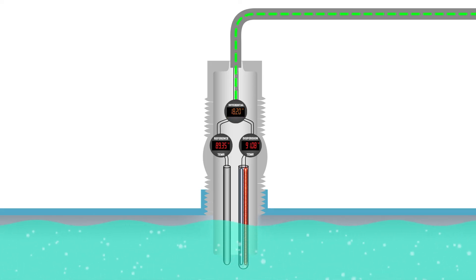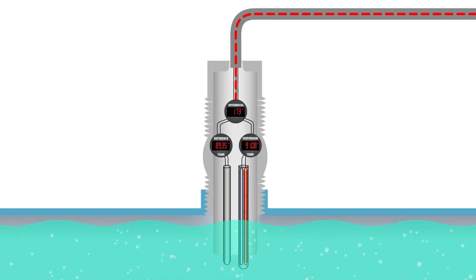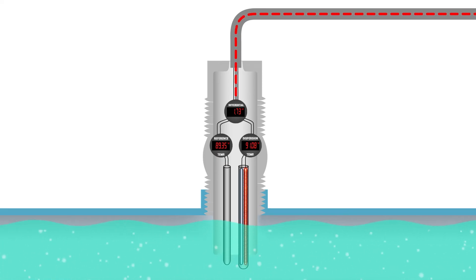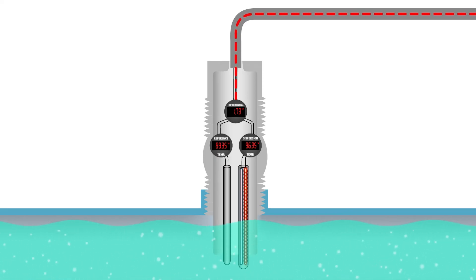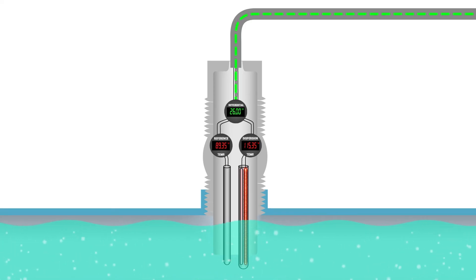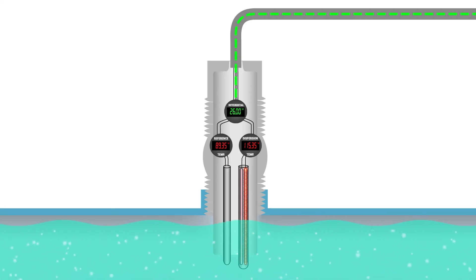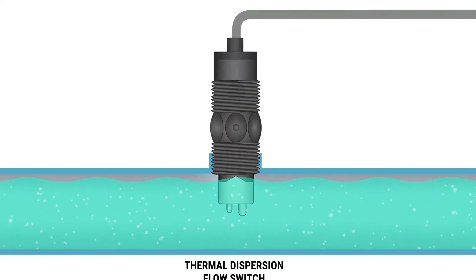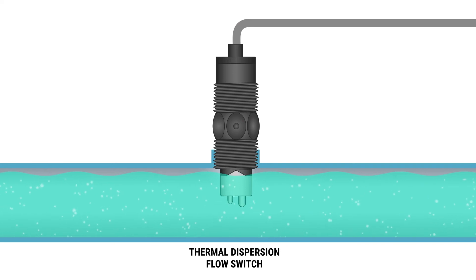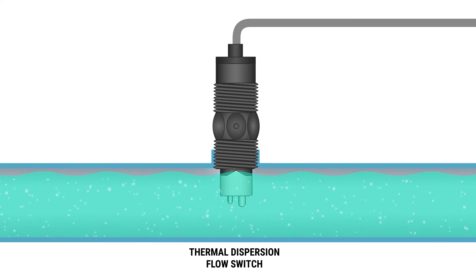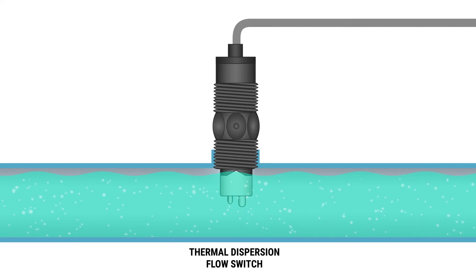A decrease in the temperature differential between the two sensors indicates that the flow rate exceeds the defined set point. When the flow rate drops, there's less cooling, which causes an increase in the temperature differential. Since a thermal dispersion flow switch has no moving parts, they have a much longer service life. However, they cannot be run dry, as with some mechanical flow switches.